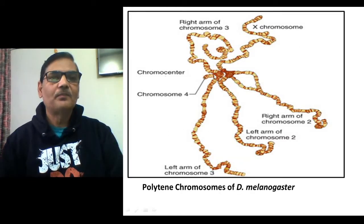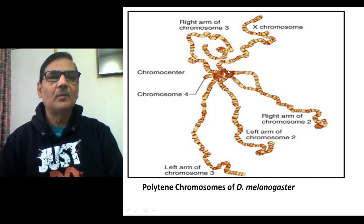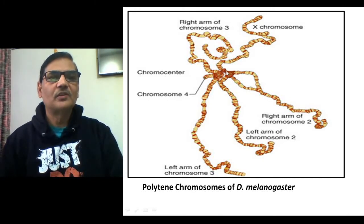In this diagram you can see the polytene chromosomes of Drosophila melanogaster. This is one of the very common structures given in many textbooks and also available through the internet. What is shown in this picture is that the centromere of all the chromosomes get attached to each other and that forms an area called the chromocenter. From that portion, the different chromosome arms radiate in different directions.